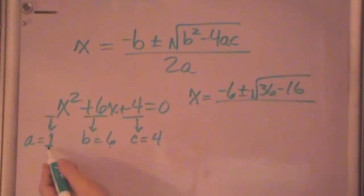All over 2 times a, which is just 2. So now simplifying this, x is equal to minus 6 plus or minus the square root of 36 minus 16 is the square root of 20, all over 2. Square root of 20 is square root of 4 times 5, so a 2 comes out.